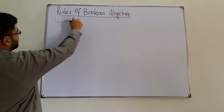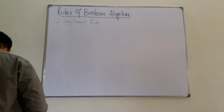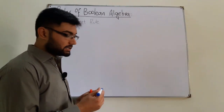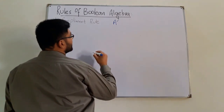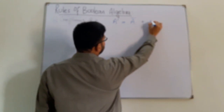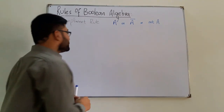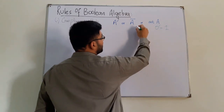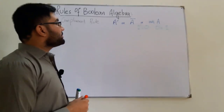The first rule is the complement rule. As I've already discussed in the previous lecture, the complement is the opposite: for 0, the complement is 1, and for 1, the complement is 0. It is written as a dash, a bar over the variable, or as 'not A', all meaning the complement of A.